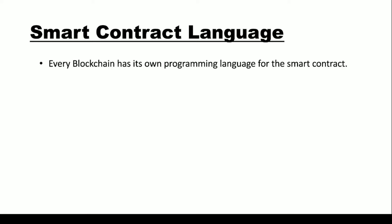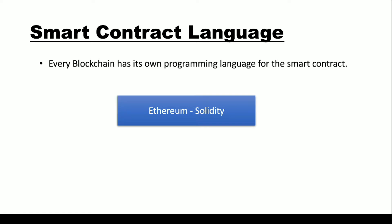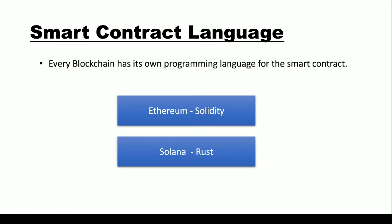Every blockchain has its own programming language for creating smart contracts. If you talk about Ethereum, it uses Solidity as its smart contract programming language. Solana blockchain uses Rust as its programming language for creating smart contracts. There are also various blockchains that support Python, Java, and other languages. Some blockchains even support multiple programming languages.